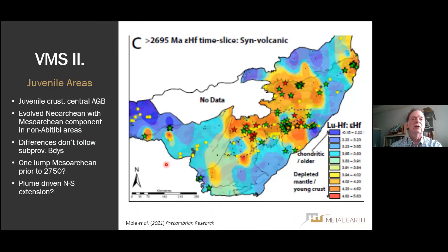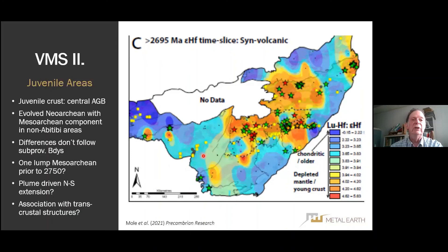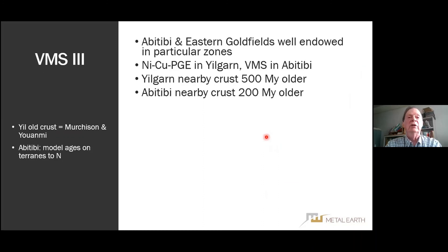A crucial point here: the differences portrayed on these isotopic maps don't follow sub-province boundaries. We can talk in terms of the whole of this diagram consisting of one lump of Meso-Archean crust prior to 2.75 Ga. Then from 2750 to 2700 Ma in round numbers, plume-driven north-south extension. There may be an association with transcrustal structures hosting the gold deposits shown with yellow squares. Both the Abitibi and the eastern goldfields of the Yilgarn are well endowed in particular zones.